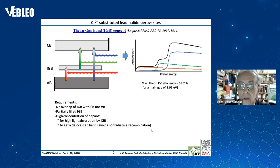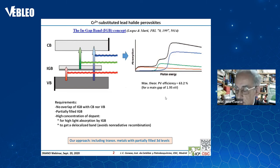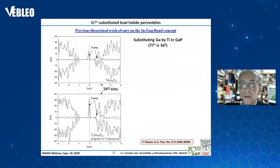Our strategy has always been to include transition metals that have partially filled 3d levels, so that with these partially filled 3d levels it is possible in some cases to achieve a partially occupied ingap band. We have been studying different systems over several years — for example, substitution of gallium by titanium in gallium phosphide.